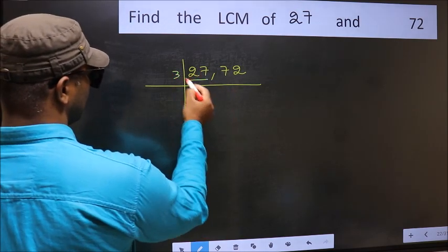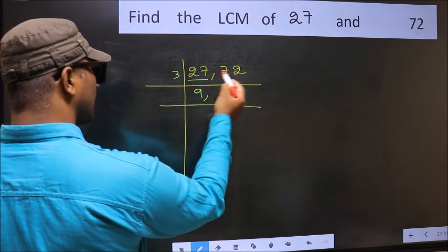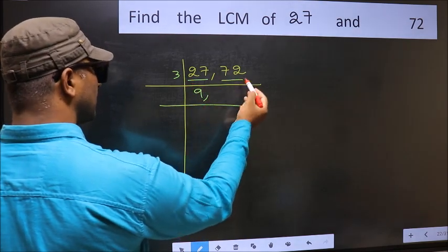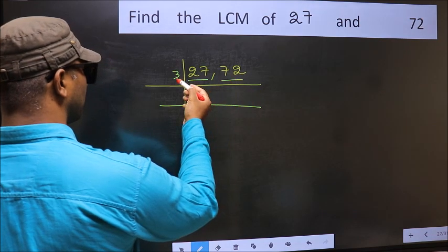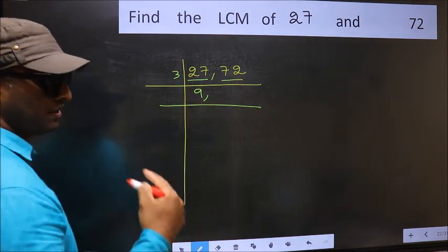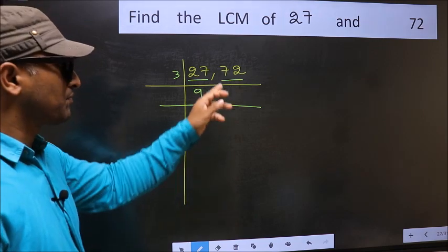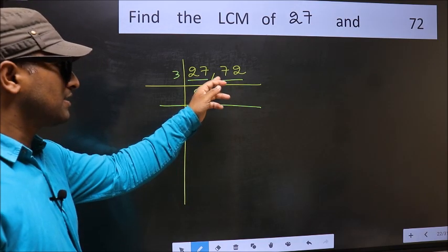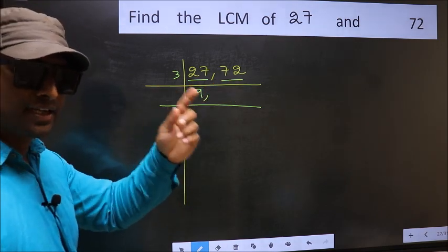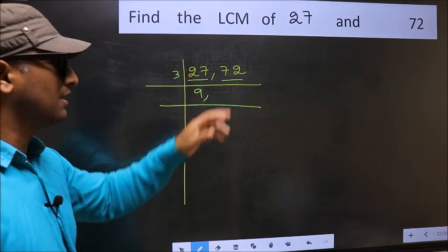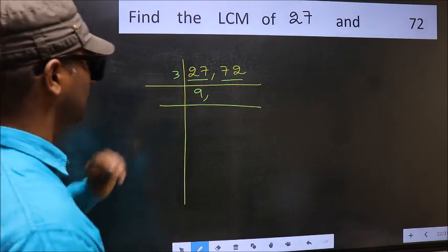27 is 3 times 9, which is 27. For the other number, 72, we check whether 72 is divisible by 3 or not. For that, add the digits: 7 plus 2 gives 9, and 9 is divisible by 3. So 72 is also divisible by 3.